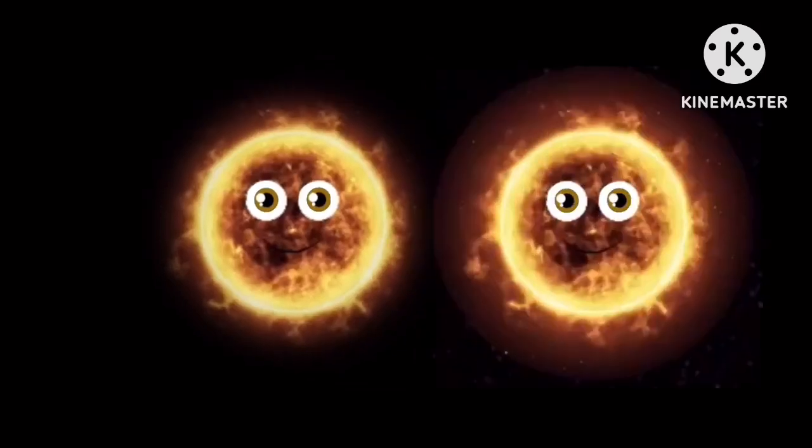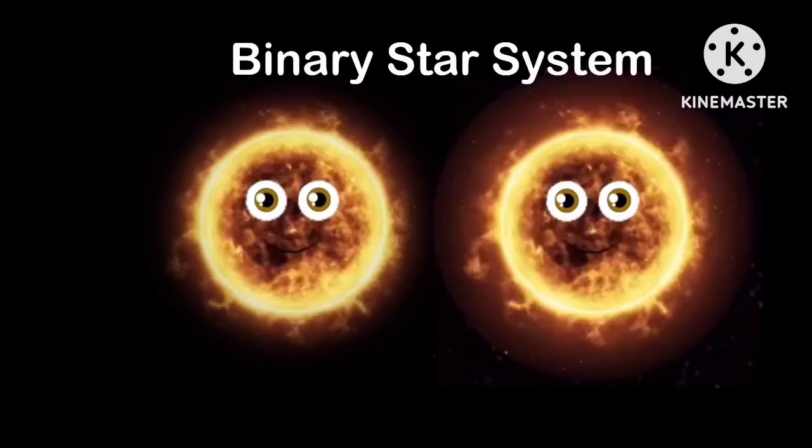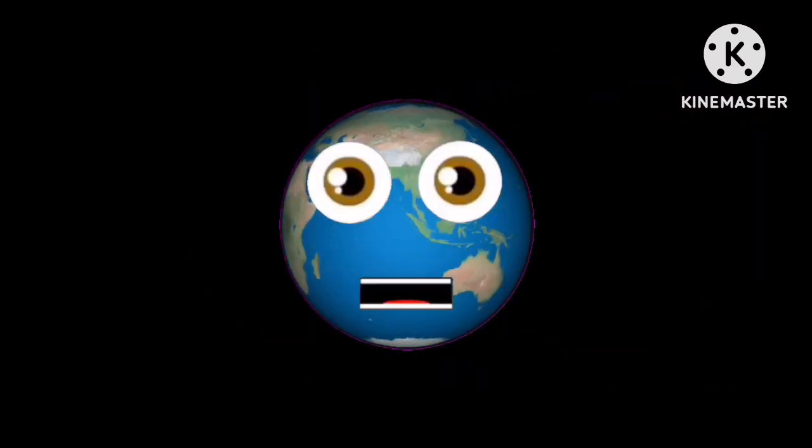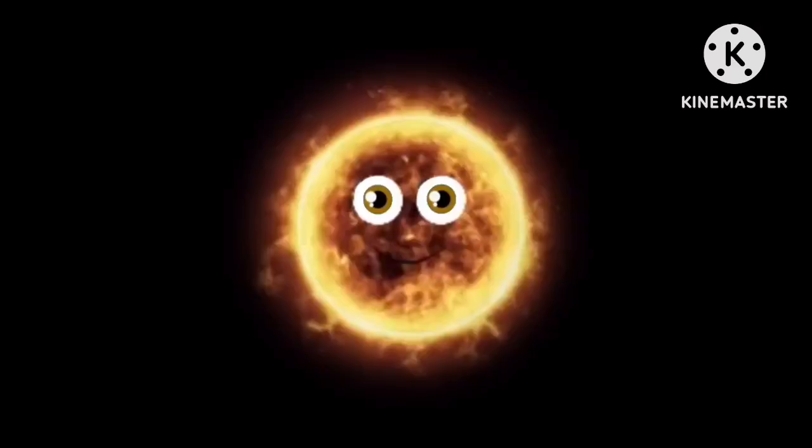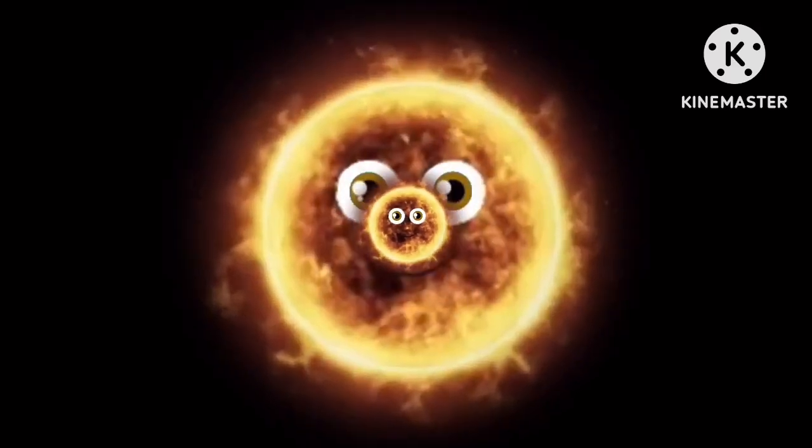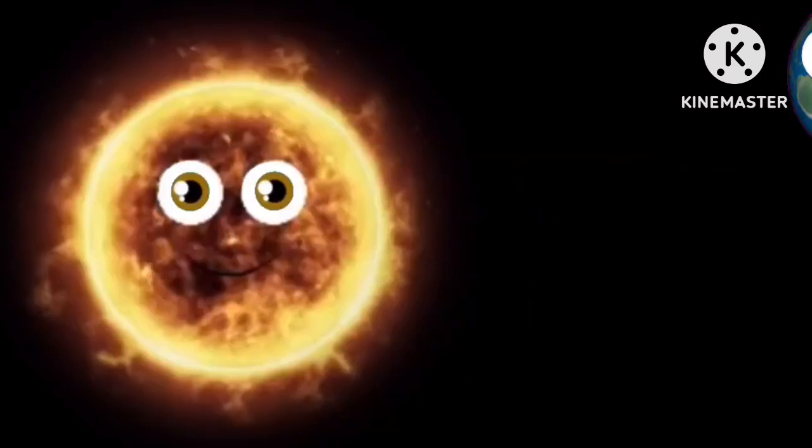If the sun was replaced by a binary star system, what would happen to the Earth? If one of these stars were bigger than the other, its gravity would pull the Earth in and the Earth would not recover.